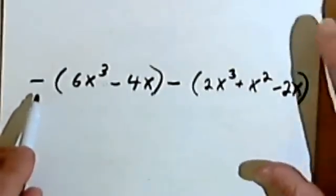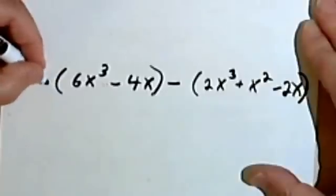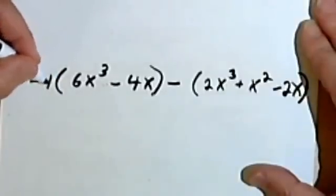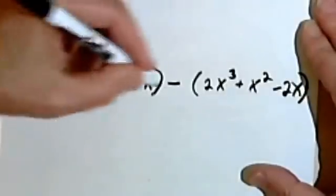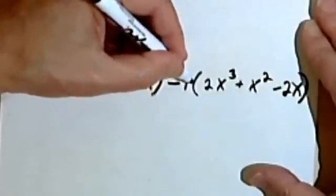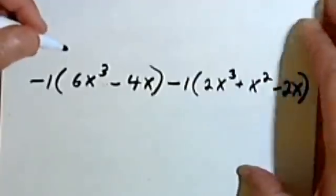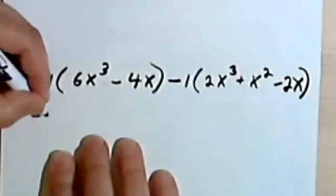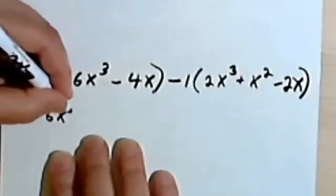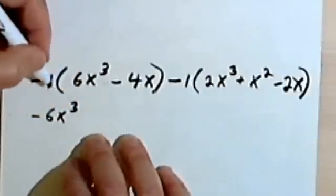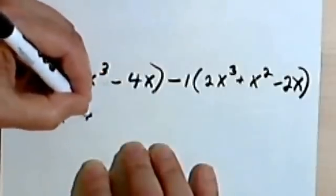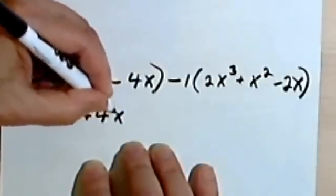So let's take care of the negative signs first. Once again, just as a reminder, I'm going to tell myself that this is -1 times this whole thing and -1 over here times the whole thing, times the polynomial. And now I'll just distribute this -1. So that's going to give me -6x³. And I've got -1 times -4x, so that's going to be a positive 4x.